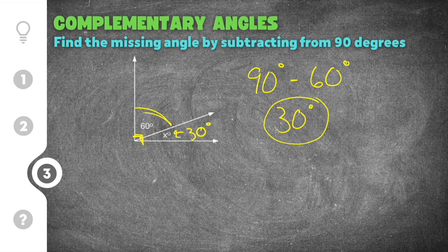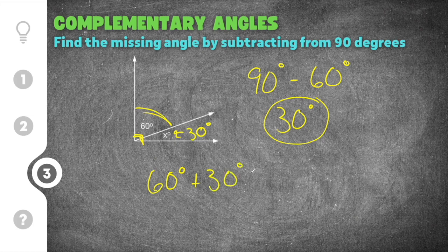And again, to double-check, you can say, alright, well our two angles—60 degrees plus 30 degrees—will add up to 90, so we know that 30 has to be the correct choice.